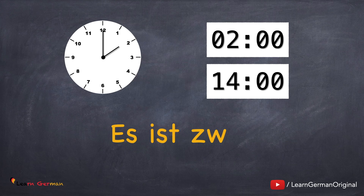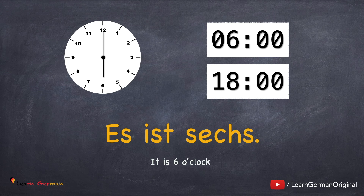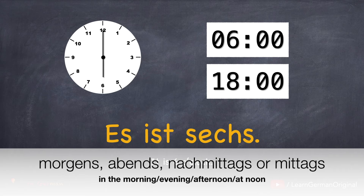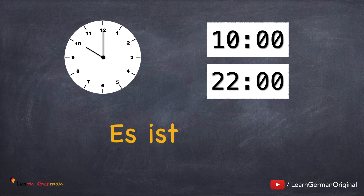Here's how you will say the full hour: Es ist zwei. You will also very commonly hear Es ist um zwei. Let's see another one: Es ist sechs. Since Germans don't use am or pm, it should either be clear from context or you add words like morgens, abends, nachmittags, or mittags to make it clear. Es ist zehn.